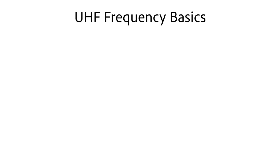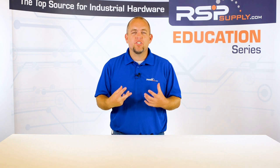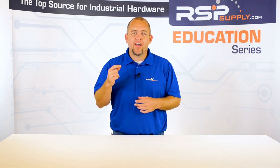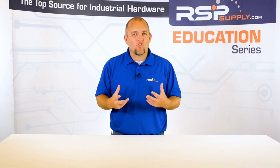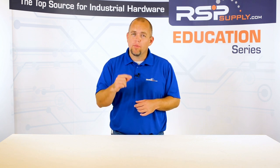The frequency range of UHF signals is directly related to the wavelength range. UHF wavelengths will range from 1 meter up to 1 decimeter. Also, the size of the antennas used for this frequency range are dictated by the size of the wavelength. So it is common to see most UHF antennas that are smaller in size, which is one of the reasons that this frequency is so commonly used.